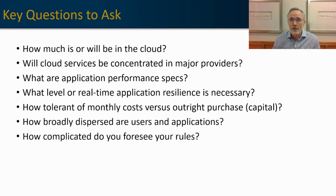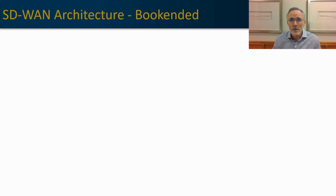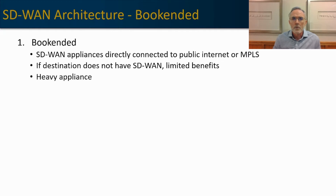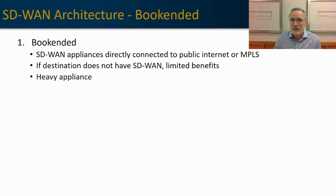Let's get into the SD-WAN architectures. The first architecture is the bookended architecture — the original architecture when SD-WAN was first introduced. It involves placing an SD-WAN appliance throughout your network, virtual appliances in any cloud environment you might have, and connecting those appliances directly to the internet or MPLS. The key thing with a bookended service is that it relies entirely on the public internet to get from point A to point Z. If a destination does not have an SD-WAN appliance, it has limited benefits. This is a heavy appliance that does most of the processing internally, and it needs a lot of horsepower.